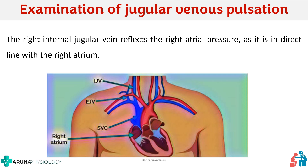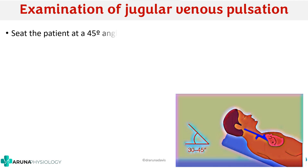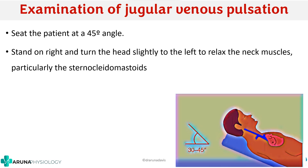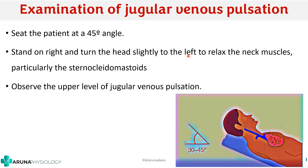For this procedure, first seat the patient at an angle of 45 degrees and then stand on the right side of the patient. Turn the head slightly to the left to relax the neck muscles, especially the sternocleidomastoid. We don't want the muscles to compress the jugular vein, so make sure the neck muscles are relaxed, then observe the upper level of jugular venous pulsation.